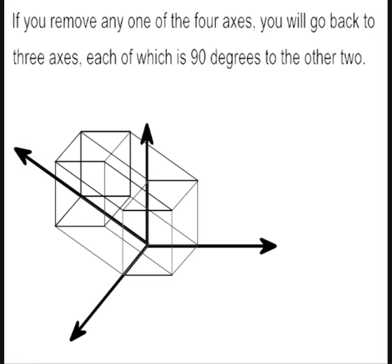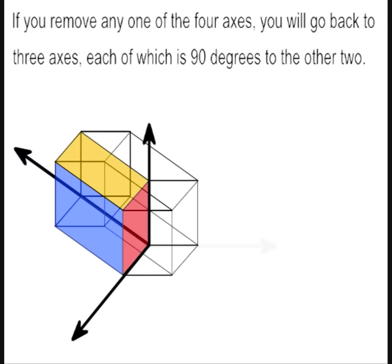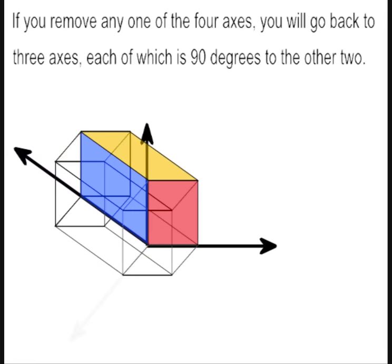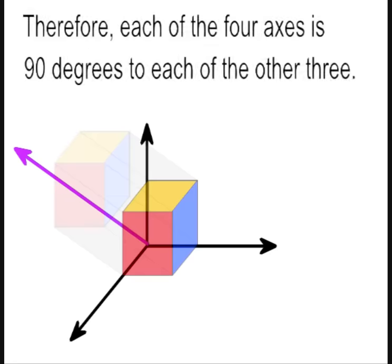If you remove any one of the four axes, you will go back to three axes, each of which is 90 degrees to the other two. Therefore, each of the four axes is 90 degrees to each of the other three.